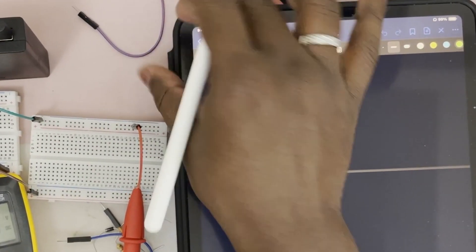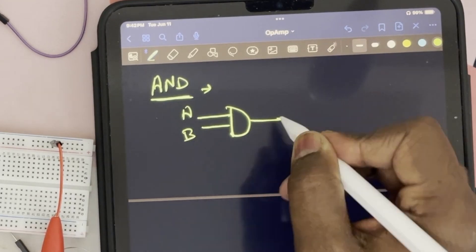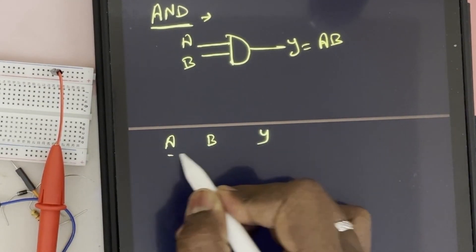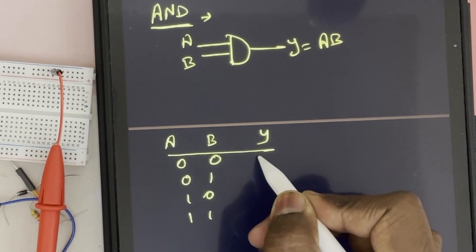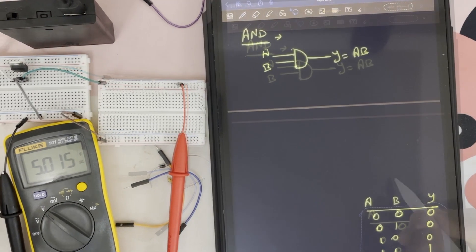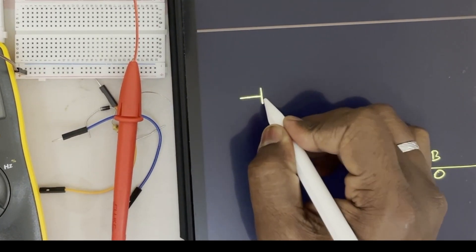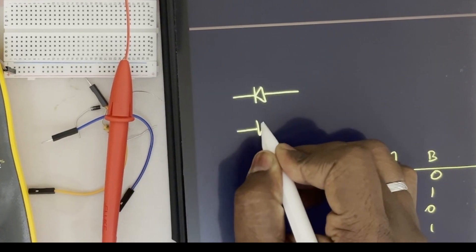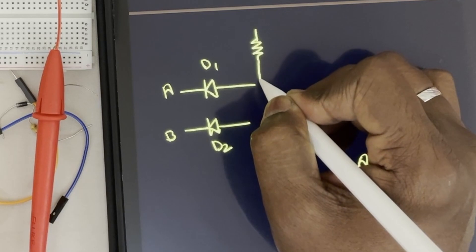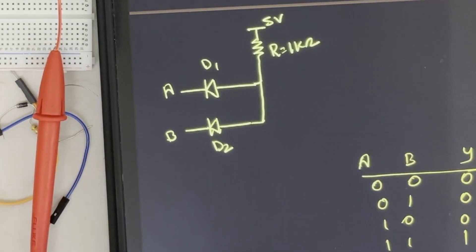Now let's check how to make an AND gate using diodes. First, let's see the circuit diagram. The AND gate symbol has inputs A and B, and output Y equals A·B. The truth table is: A=0, B=0, Y=0; A=0, B=1, Y=0; A=1, B=0, Y=0; A=1, B=1, Y=1. Now let's draw the circuit diagram of AND gate using diodes. We have two diodes, D1 and D2, with A and B as inputs, connected to a resistance R equal to 1 kilo ohm.